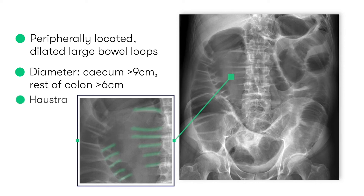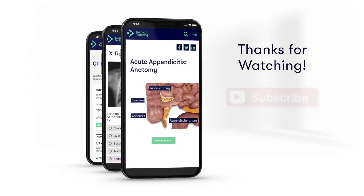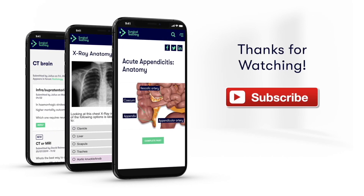These are different from the valvulae conniventes that we see in the small bowel, which are fully circumferential folds of mucosa that appear as lines spanning the full width of the lumen of the small bowel.